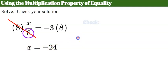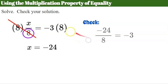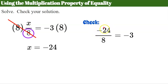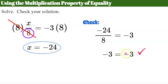Let's check to make sure this is accurate. I'll replace x in the original equation with negative 24. Negative 24 divided by 8 is indeed negative 3, so it checks.